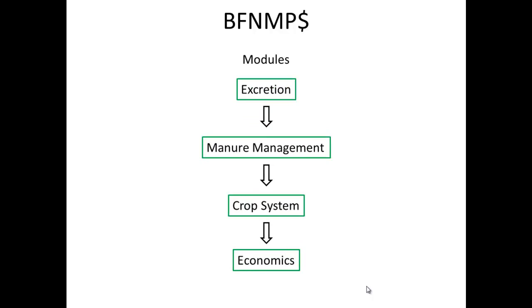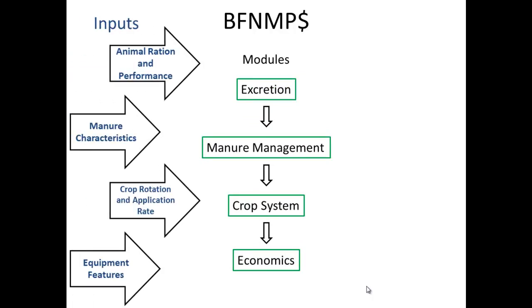The BFNMP program is broken down into four modules. Within each module, the operator is asked to put in inputs or answer questions about their specific operation. At each step there are default values, so if you don't know the specifics for your operation, you can use the defaults and still get answers. The first module is excretion by the cattle — you're asked questions about what kind of diet you're feeding, what kind of performance you expect, such as average daily gain, dry matter intake, and days on feed.